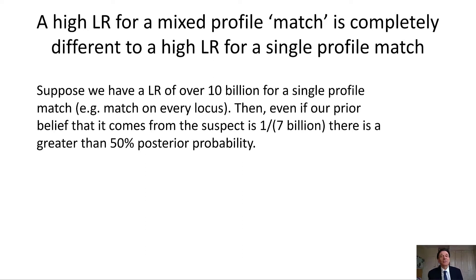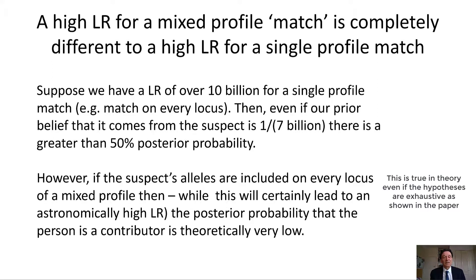That's why a high likelihood ratio for a mixed profile match is completely different to a high likelihood ratio for a single profile match. For a single profile match with a likelihood ratio of over 10 billion, even if our prior belief that it comes from the suspect is one over the world population — about one over seven billion — there would still be a greater than 50% posterior probability. So the evidence is incredibly probative in this case. But for a mixed profile, if the suspect's alleles are included on every locus, while it will lead to an astronomically high likelihood ratio, the posterior probability of the person being a contributor is theoretically very low.